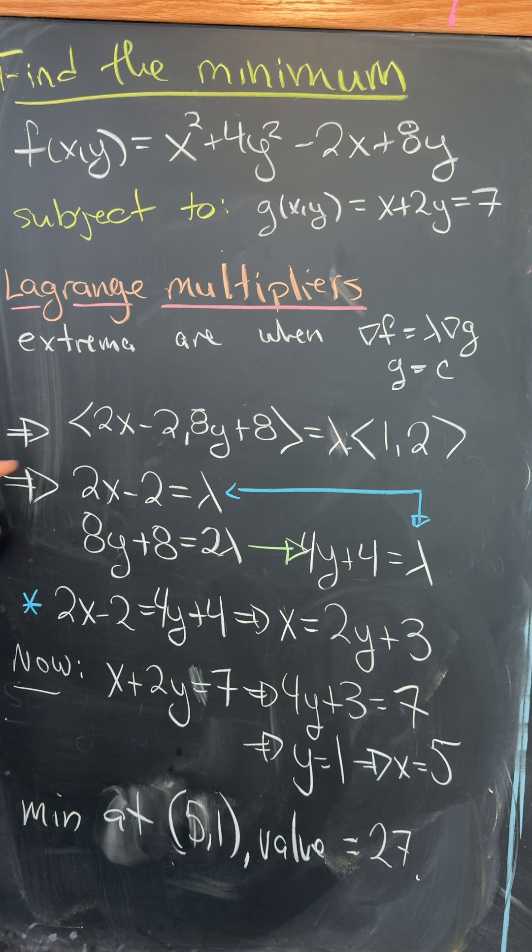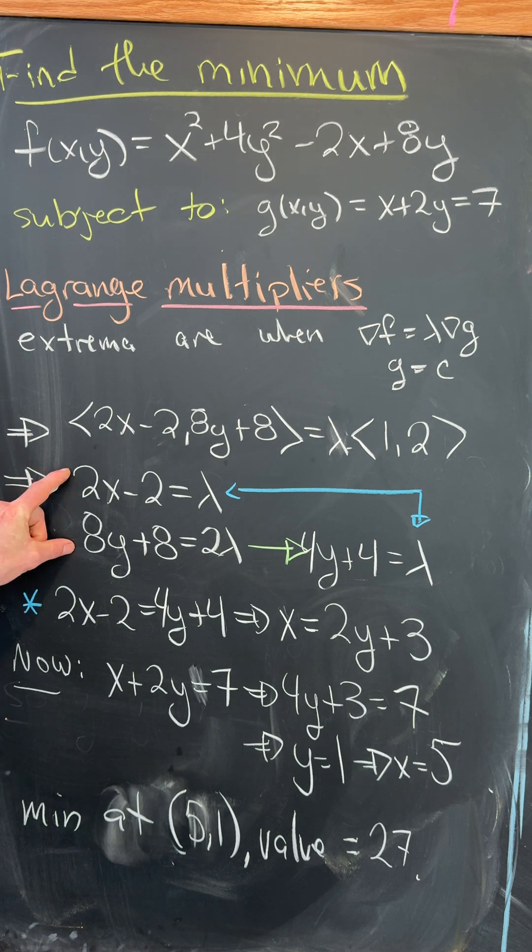So here we've got the gradient of f equal lambda times the gradient of g, which gives us this nice system of equations over here.